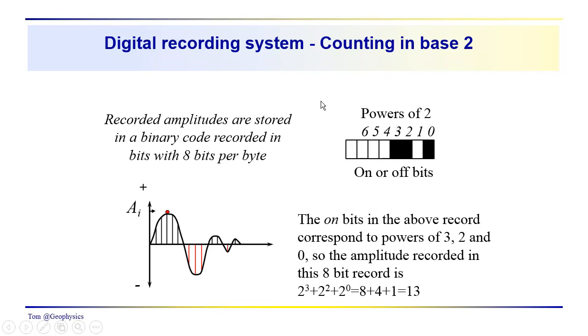Now, the type of recording system that is used is a digital recording system, and it's a base-two recording system. So, the amplitudes are stored in a binary code recorded in bits, and there are eight bits per byte. This is one byte of data here. We have eight bits. This is usually a sign bit for an eight-bit recording system.